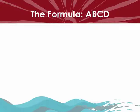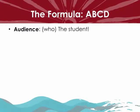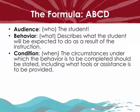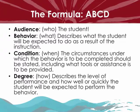The formula for writing measurable objectives is A, B, C, and D. A is your Audience, or the who — always our student. B is for Behavior, or the what — what the student will be expected to do as a result of instruction. C is the Condition, or the when — the circumstances under which the behavior is to be completed, including what tools or assistance is provided. D is the Degree, or the how — the level of performance and how well or quickly the student will be expected to perform the behavior.